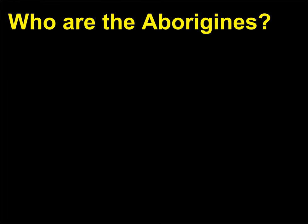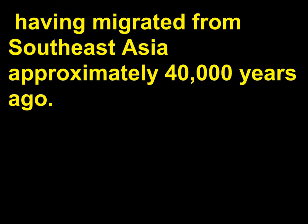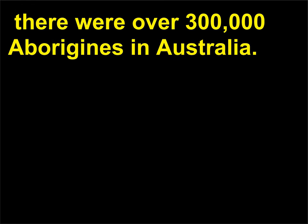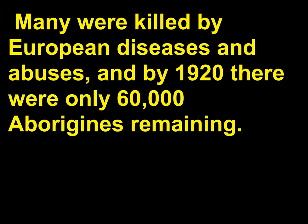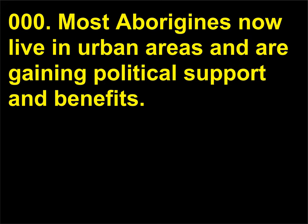Who are the Aborigines? The Aborigines are the indigenous inhabitants of Australia, having migrated from Southeast Asia approximately 40,000 years ago. In the late 18th century, when European colonization began, there were over 300,000 Aborigines in Australia. Many were killed by European diseases and abuses, and by 1920 there were only 60,000 Aborigines remaining. Like the Maori of New Zealand, Australia's Aborigine population rebounded in the late 20th century and now stands at over 200,000. Most Aborigines now live in urban areas and are gaining political support and benefits.